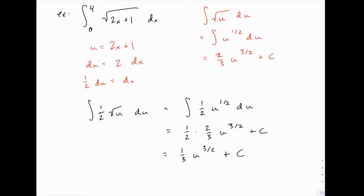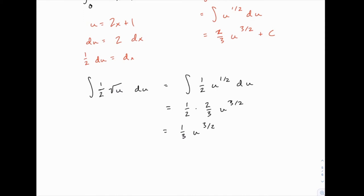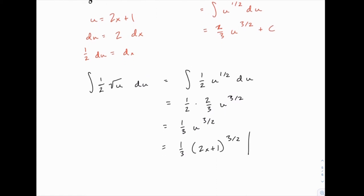Except that in this case, we don't really need the plus c, right? Because we're doing a definite integral. So we can ignore that. And once we come back and get our answer in terms of x, then we can plug in our limits of integration, which are zero to four.